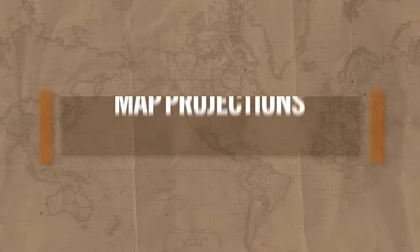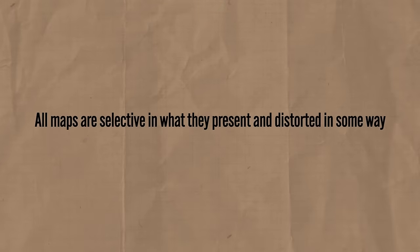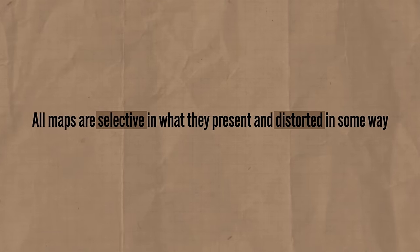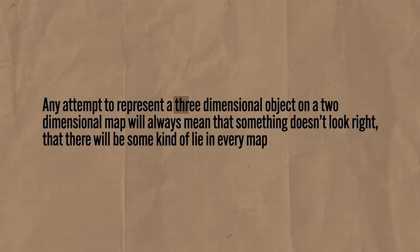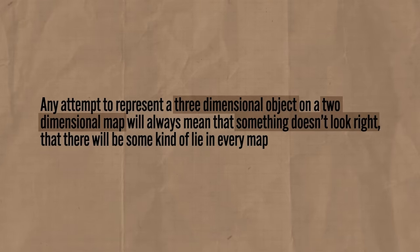Now that we've become relatively cozy with what maps are and what they're good for, we can finally figure out what's wrong with all those maps I showed you in the beginning. All maps are selective in what they present and distorted in some way. In case you didn't know, the Earth is a sphere — and if there are any flat earthers watching, well, this probably is not the course for you, but I still love y'all. The Earth is a sphere, and any attempt to represent a three-dimensional object on a two-dimensional map will always mean that something doesn't look right — there's going to be some kind of lie in every map.